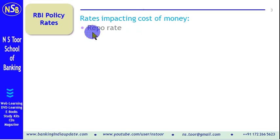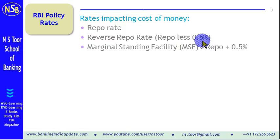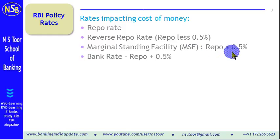The first basic rate is repo rate — repo rate is the basic rate. The second one is reverse repo rate, which is attached to repo rate and it is repo minus 0.25%. Marginal Standing Facility rate, that is MSF rate, is also attached to repo rate, so it is repo plus 0.5%. Similarly, bank rate is also attached to repo rate and equals repo plus 0.5%.